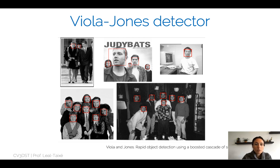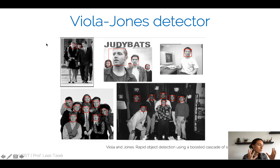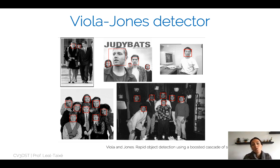This actually works pretty well — you can see some results here. Especially for frontal faces, this works really well. Of course, once you have a face looking sideways, the Haar-like features don't overlap as well with that type of side face. So the Viola and Jones detector was not able to detect that type of face, but otherwise it worked really well.